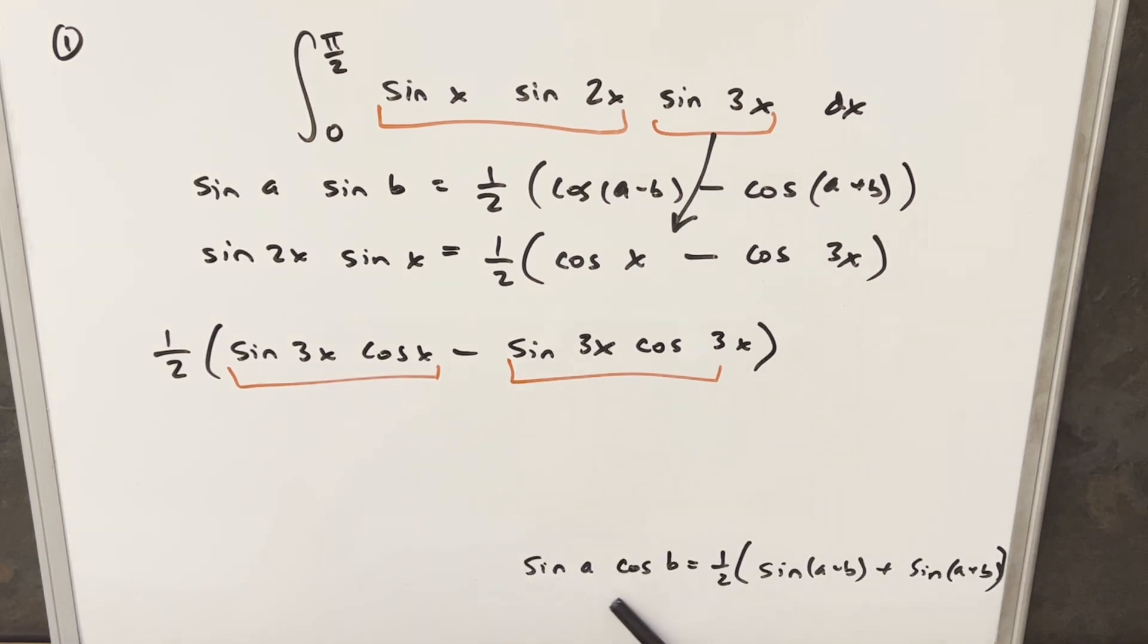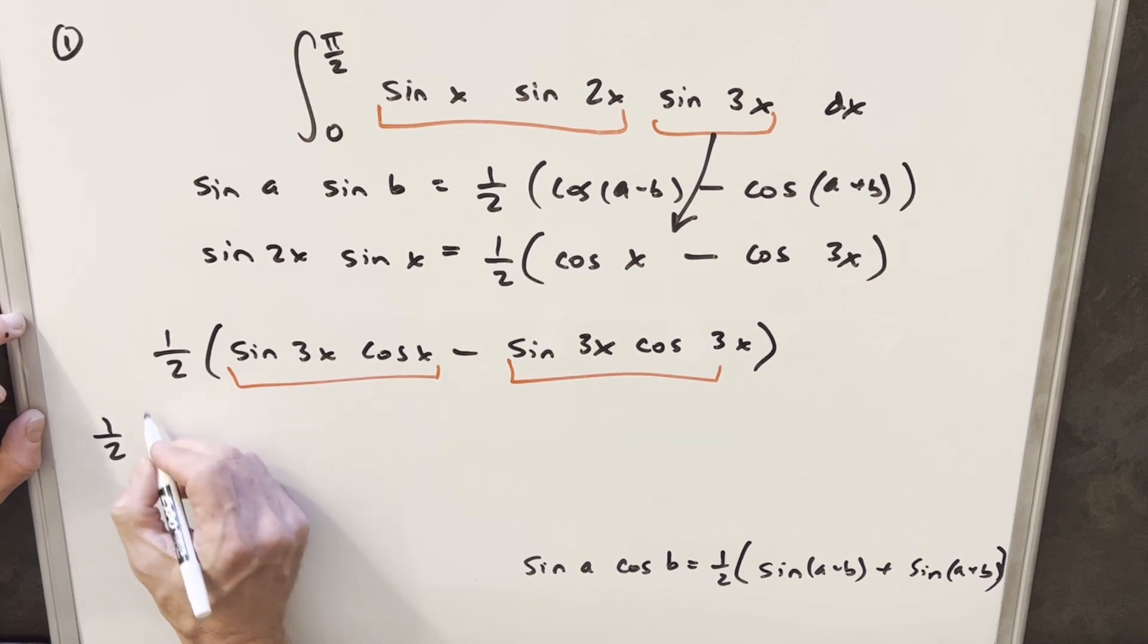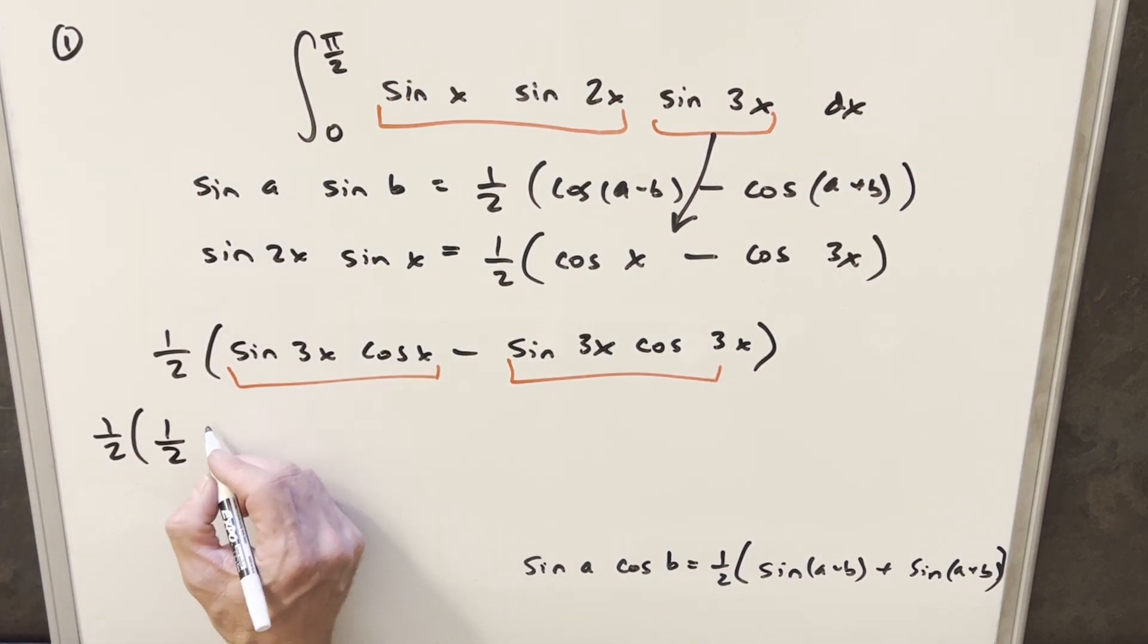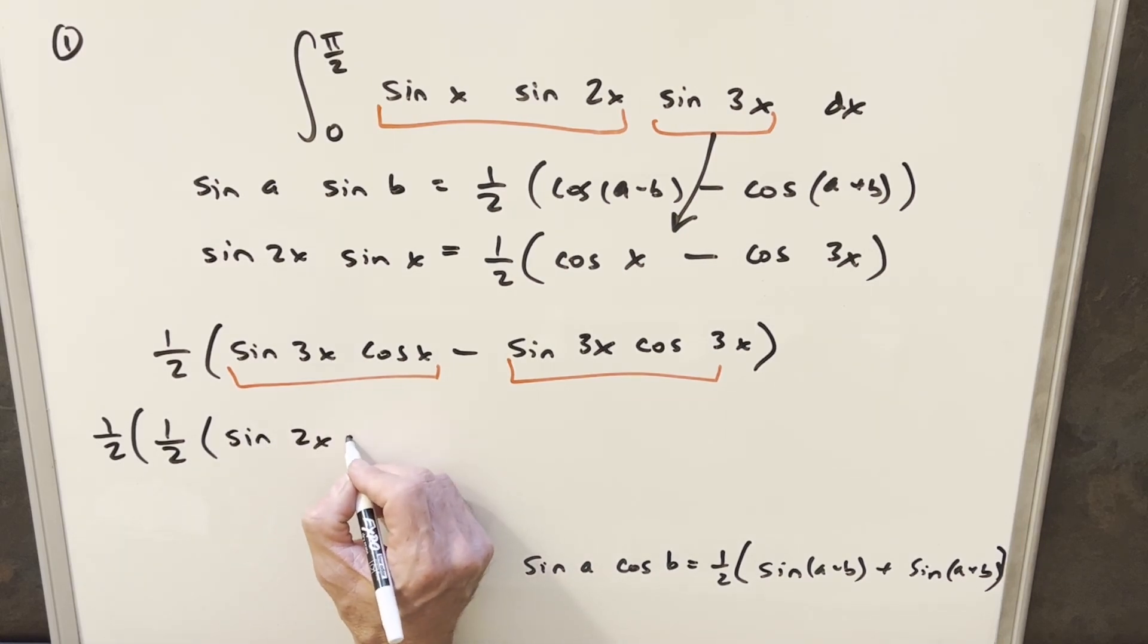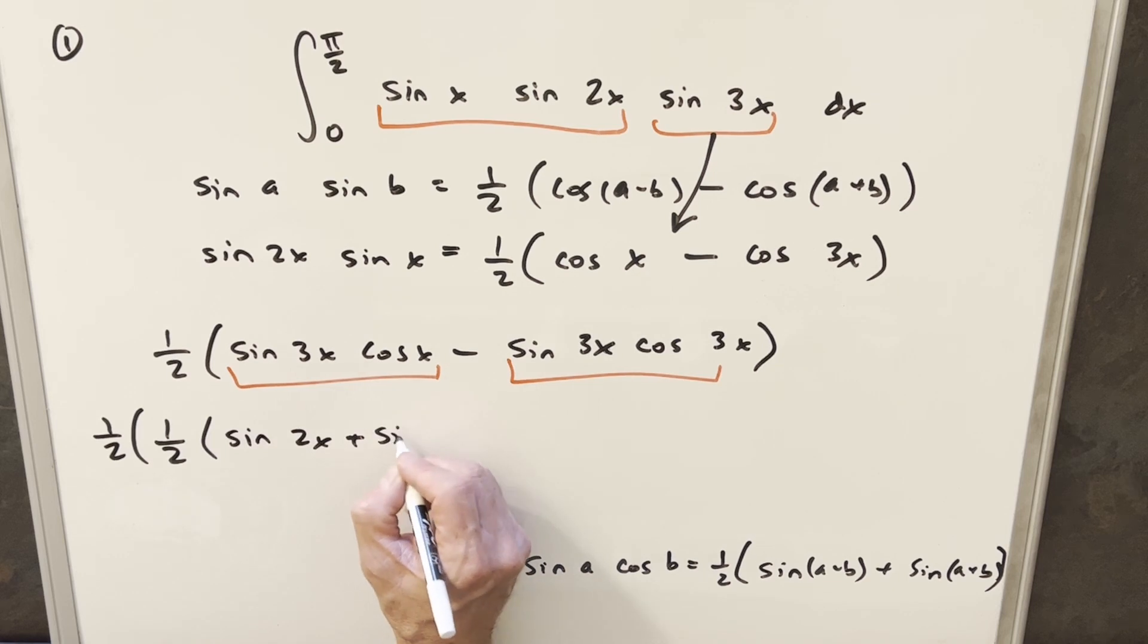Now we've got this very similar formula for sine and cosine down here on the right. This is just going to break up this product into a sum of sine angles. So let's use this on both of these. So for our first one, using this, we're going to have, for sine 3x times cosine x, we're going to have our 1 half out front, then we're going to have the difference of the angles. This is going to be sine of 2x plus the sum of the angles, which is just going to be sine of 4x.